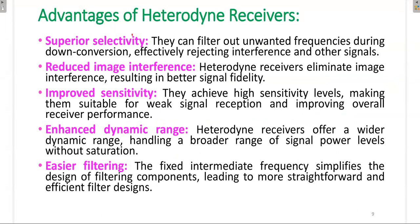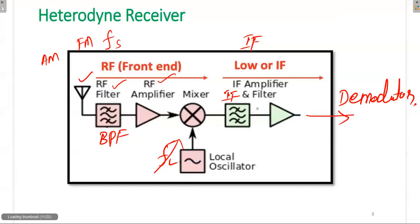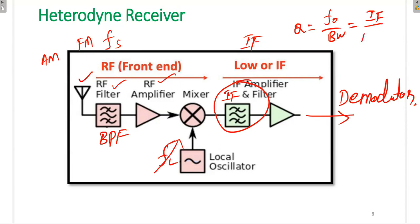The Heterodyne Receiver has superior selectivity because the IF is fixed. Once IF is fixed, the Q factor Q = F0/bandwidth is also fixed, since bandwidth is fixed for any communication system and F0 equals IF. This allows us to design a perfect filter at the receiver. If IF were varying, Q would vary, making filter design difficult. With fixed IF and fixed Q, we can design very good filters providing better selectivity - meaning when we want to receive a particular station, we effectively reject all other stations.